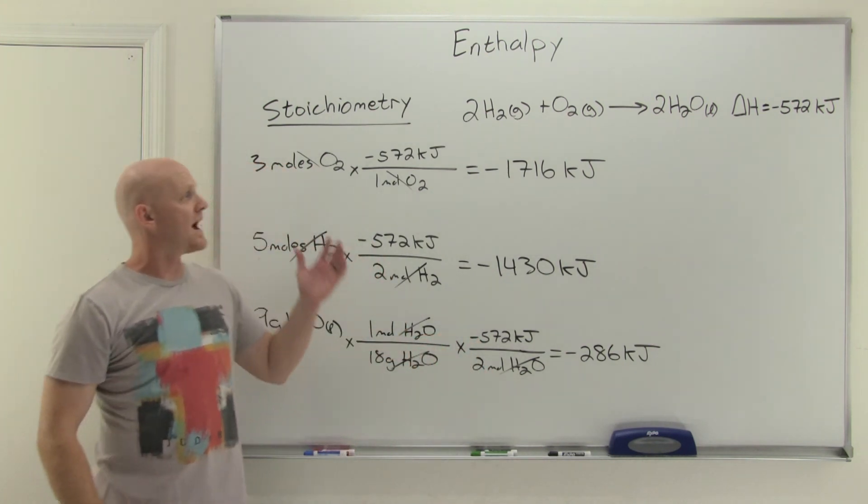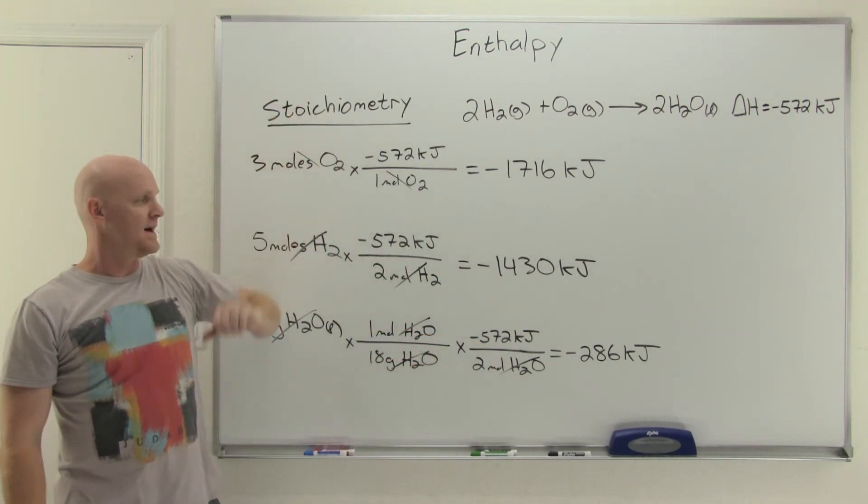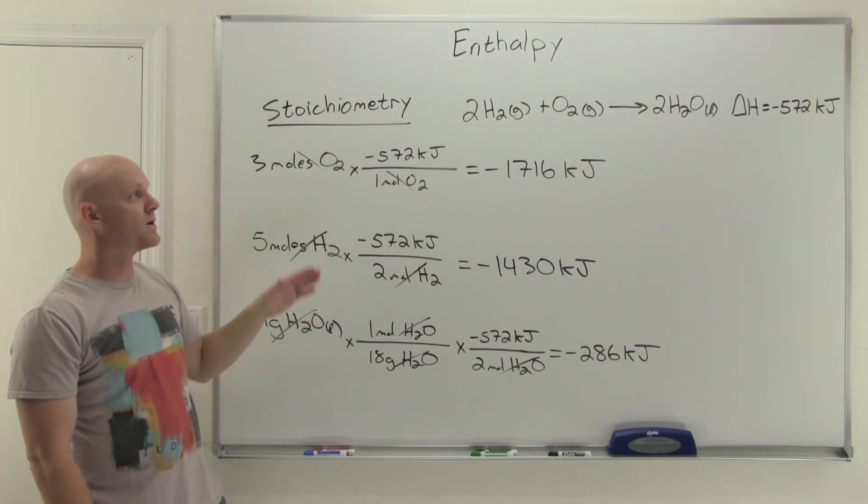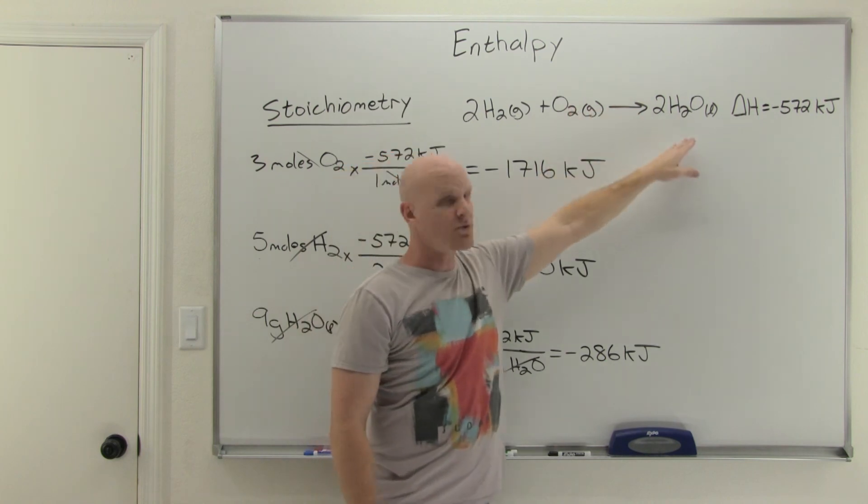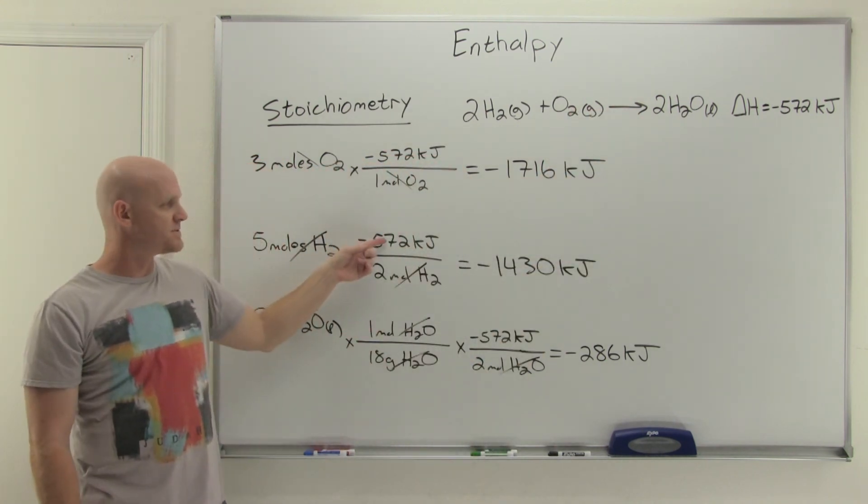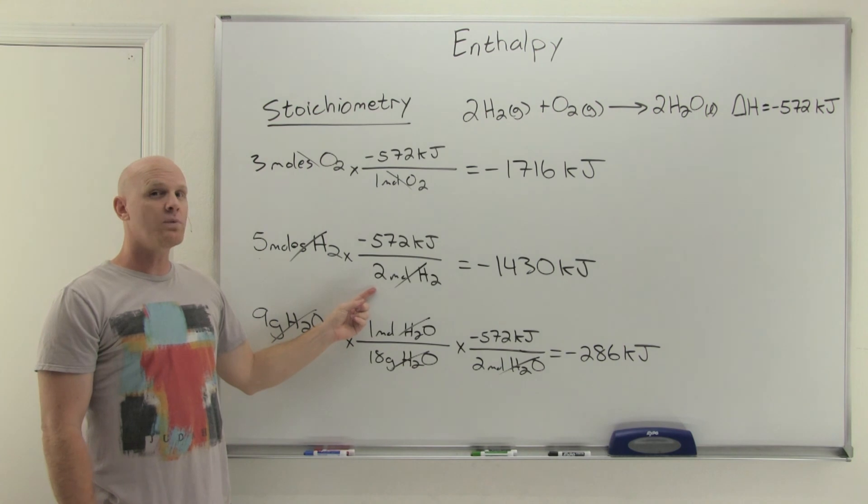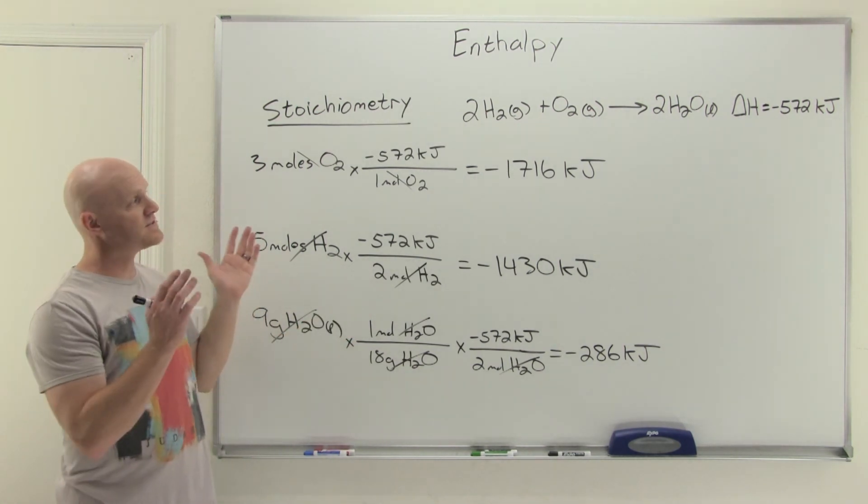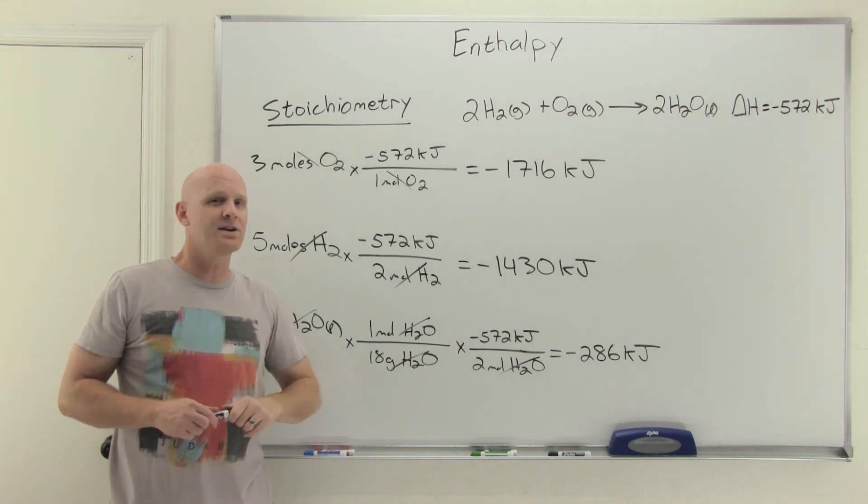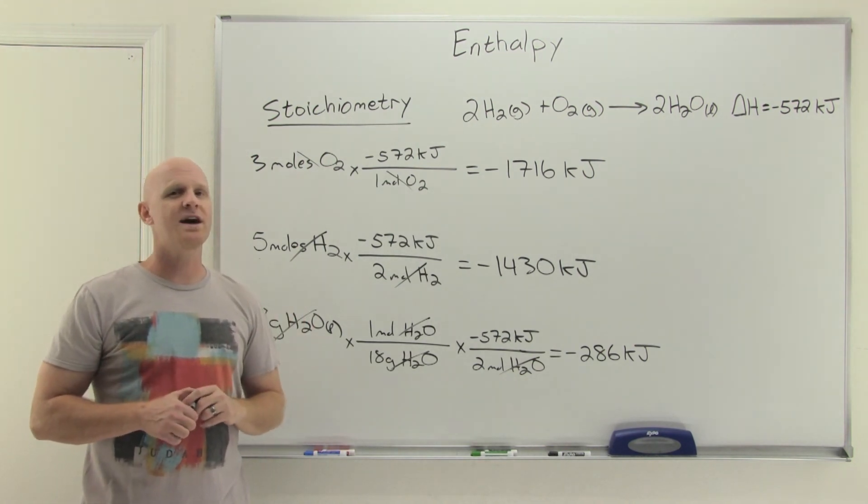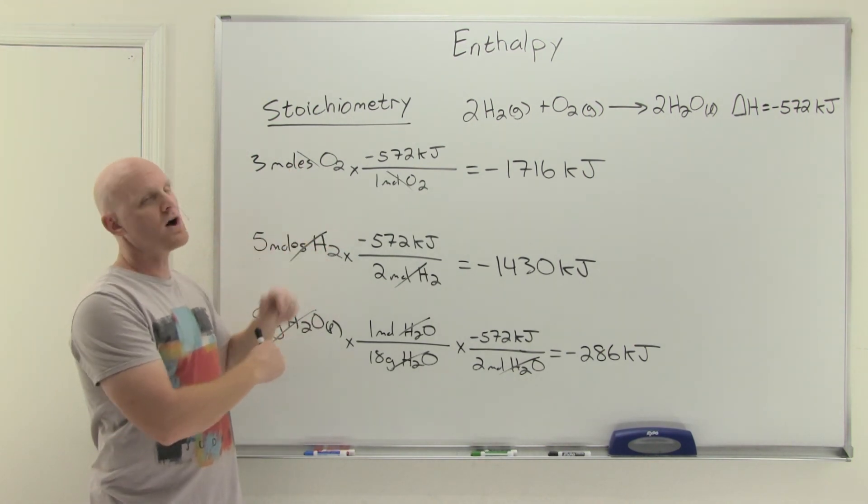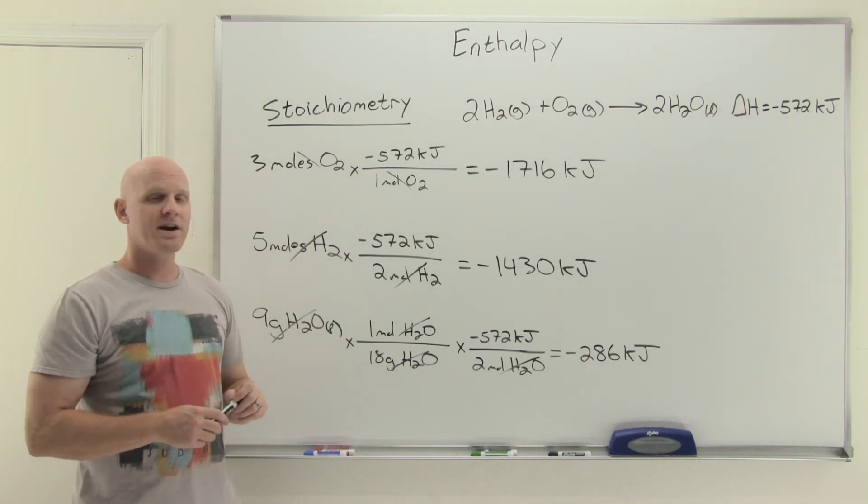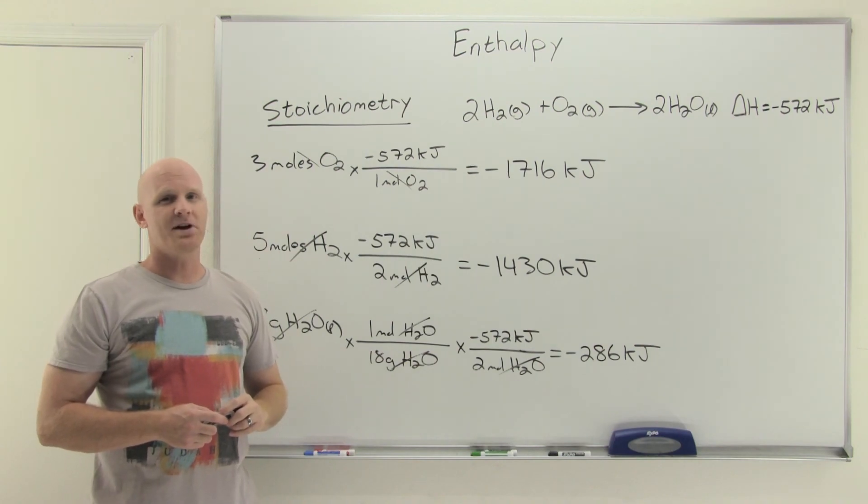And that is how we relate enthalpy and stoichiometry. The big key is just start off with whatever you're being asked and how much you have, or the reactant or how much of a product you're trying to produce. Then use the delta H provided scaled to your reactant or product and the number of moles in the balanced reaction. Now, if you found this lesson helpful, consider giving me a like and a share. One of the best things you can do to support the channel. If you're looking for practice problems on enthalpy or stoichiometry, and if you're looking for the study guide that went with this lesson, check out my premium course on chadsprep.com.